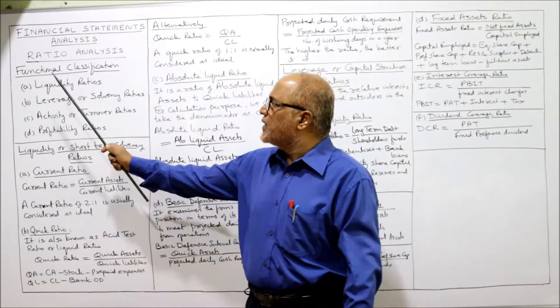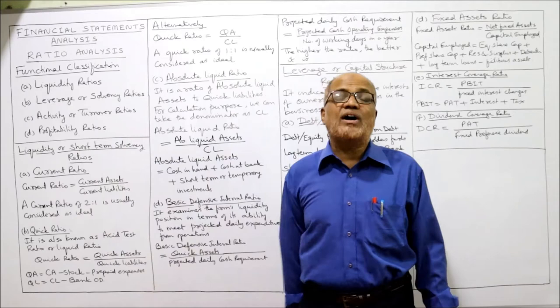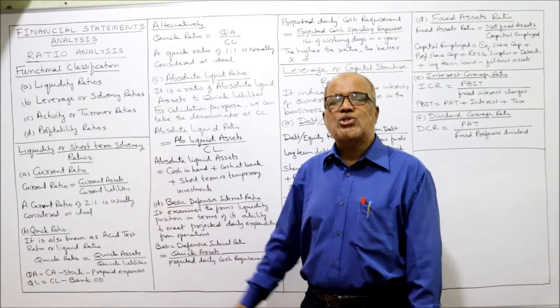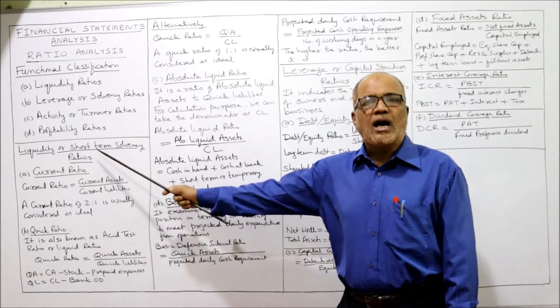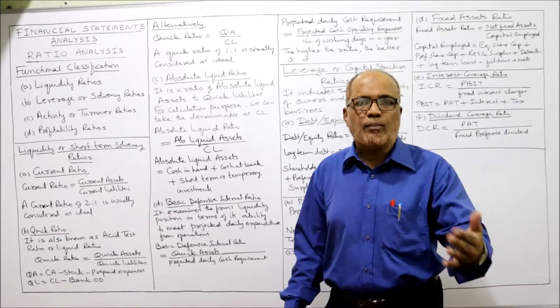First of all, functional classification. One of the most important methods of classification of ratios is functional classification. According to functions, the ratios are classified into four categories: first, liquidity ratios; second, leverage or solvency ratios; third, activity or turnover ratios; and fourth, profitability ratios.